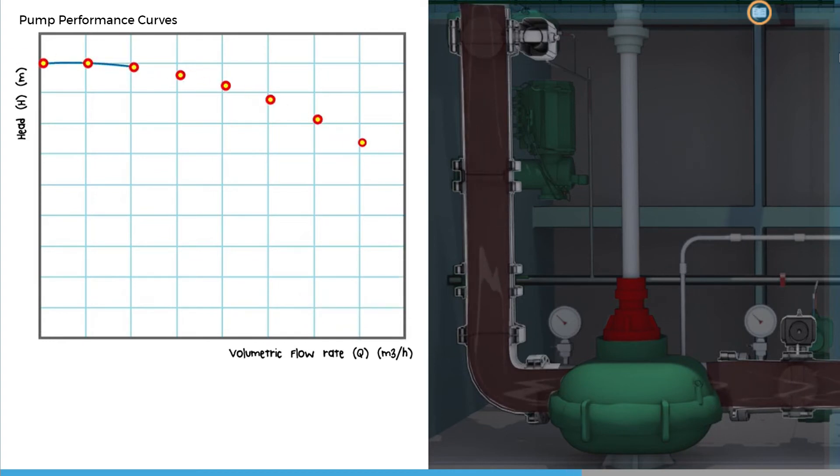Pump manufacturers create the range of head conditions by throttling the pump discharge valve under test conditions and recording the various flow rates.